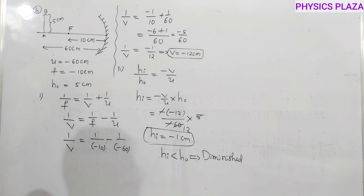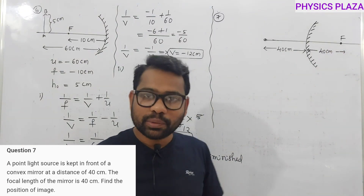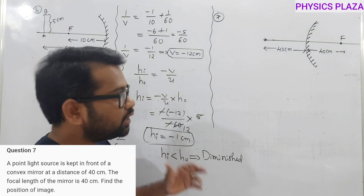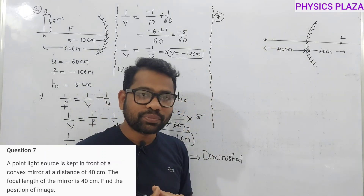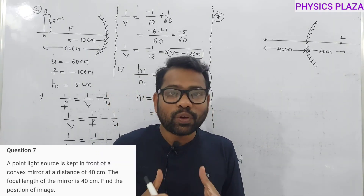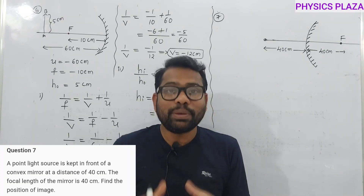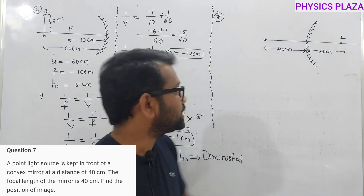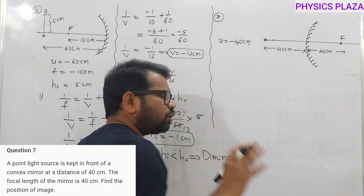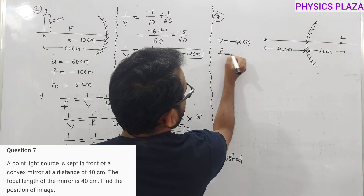Seventh numerical: convex mirror. An object is placed in front of a convex mirror at a distance of 40 cm and its focal length is 40 cm. A key difference: for a concave mirror the focal length is negative, but for a convex mirror the focal length is positive. So here f = +40 cm and u = −40 cm.